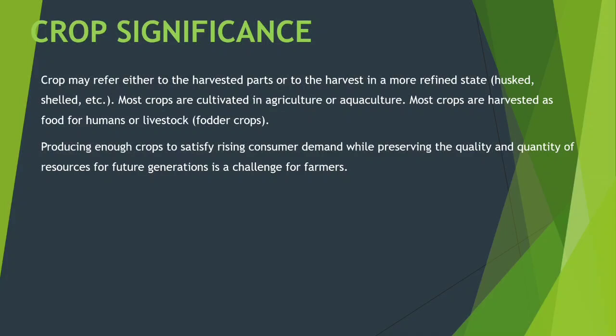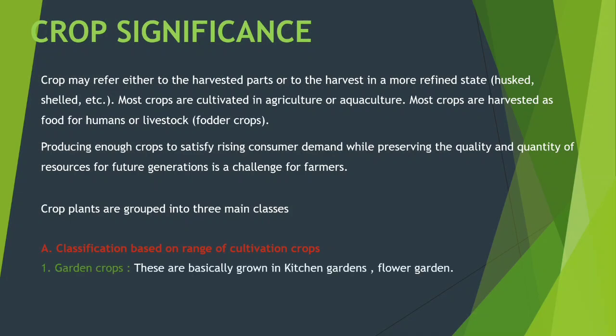Crop plants are grouped into three main classes. The first classification is based on range of cultivation. Garden crops are grown in kitchen gardens or flower gardens. Plantation crops include tea and coffee. Field crops include wheat and rice.